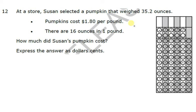All right, last one for this quiz. At a store, Susan selected a pumpkin that weighed 35.2 ounces. The pumpkin costs $1.80 per pound. There are 16 ounces in one pound. How much did Susan's pumpkin cost? Express the answer in dollars and cents. This is a multi-step problem, okay? You can do this a couple different ways. I'm going to do it one way, but if it works out for you another way, that is perfectly fine. The first thing that I'm going to do is change this ounces to pounds, okay?